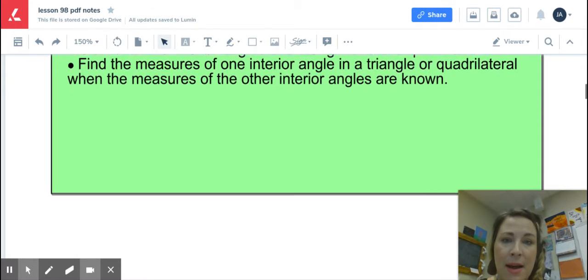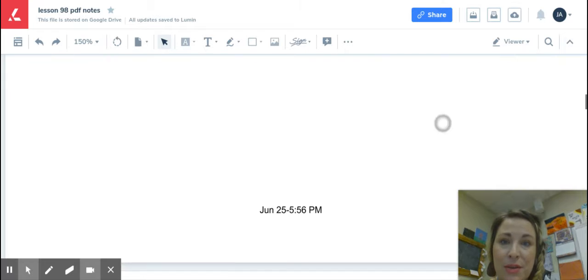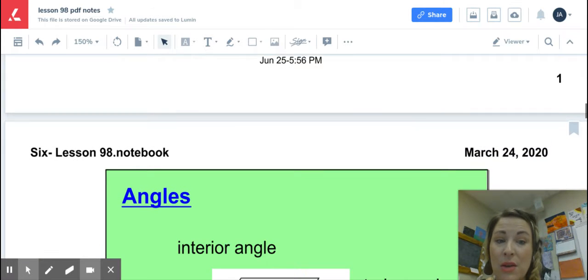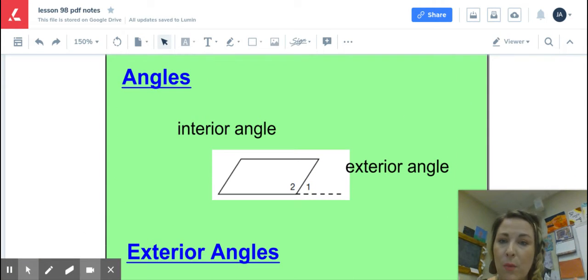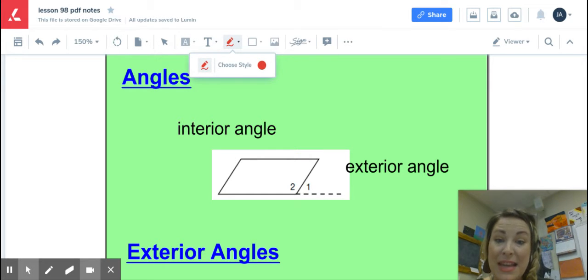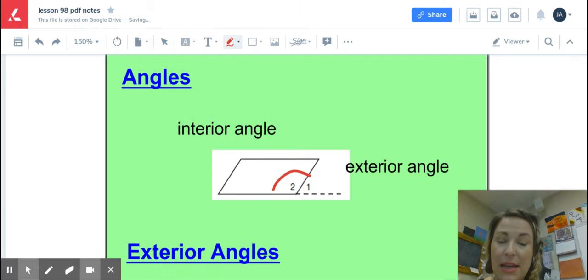So again, this is one of those times in math I'm going to encourage you just to use the information that you know to find out what you don't know. So what we're going to review right away are just these angles when we're looking at a polygon. Look at this example here. We have a parallelogram in front of us. In this specific example, the interior angle in this case is angle two. It's on the interior or the inside of the polygon.